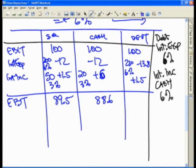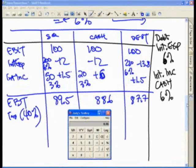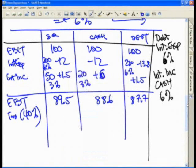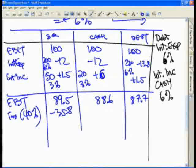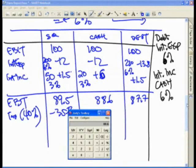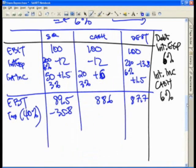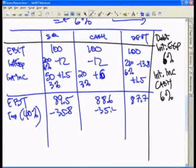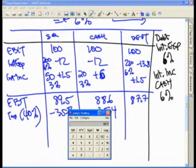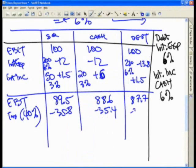When you take a 40% tax rate now, 40% of $89.5, let's take a quick look at this, $89.5 times 0.4 is $35.8, $88.6 times 0.4 is $35.4, and $87.7 times 40% is $35.1 rounded.